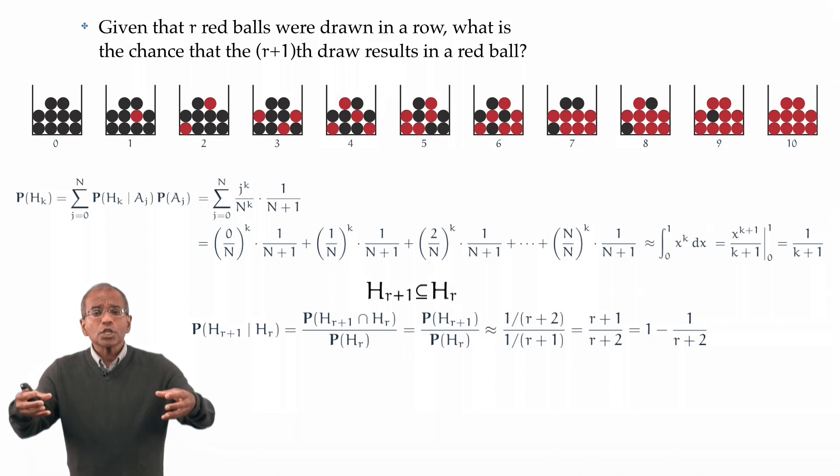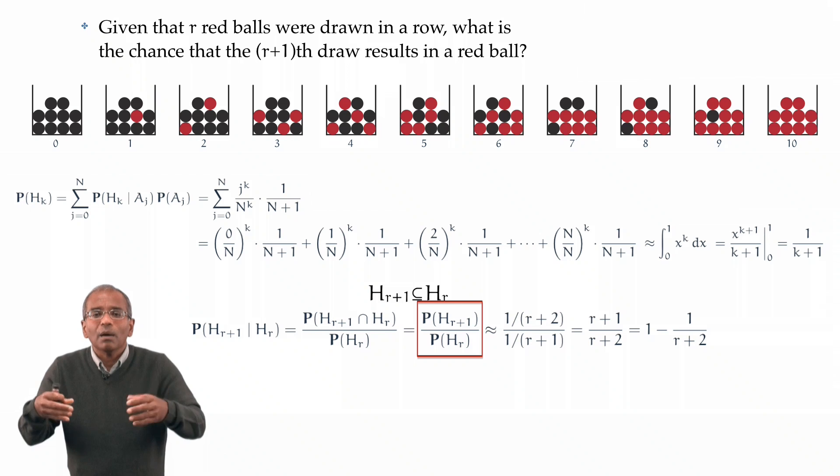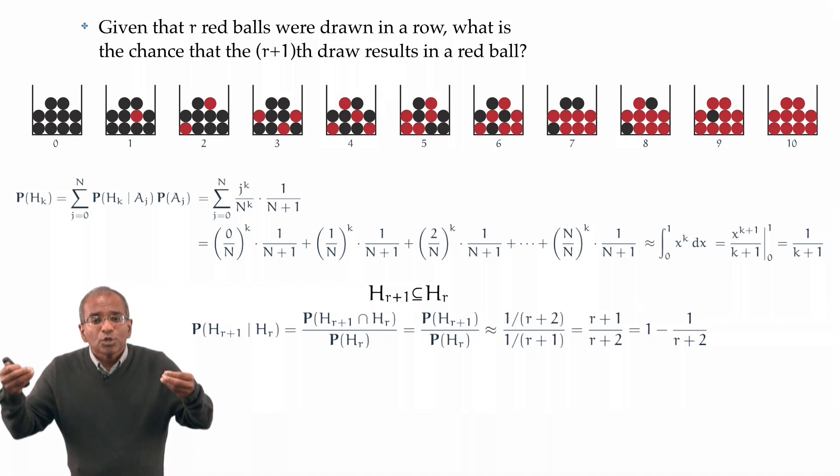And therefore, the conditional probability in question devolves into a ratio of probabilities. Hr plus 1 in the numerator, Hr in the denominator. And now we simply plug in our beautiful Riemann approximation. And if we do this, we discover that the conditional probability of drawing a red ball, given that r red balls have been drawn, differs from 1 only in the reciprocal of r plus 2. One could hardly ask for a simpler, cleaner explanation.